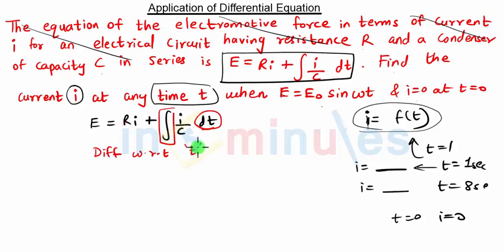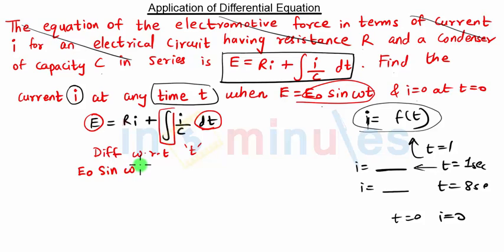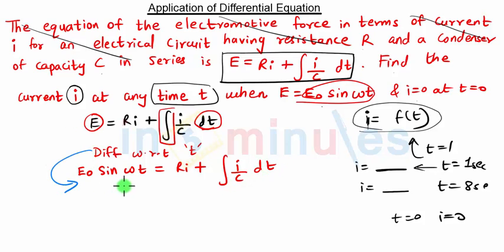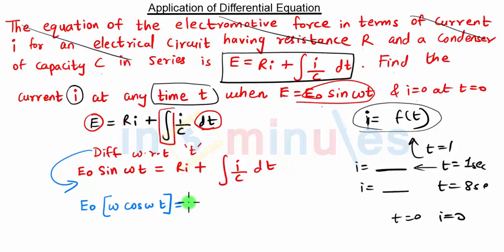Before differentiating, we substitute E = E₀ sin(ωt), giving E₀ sin(ωt) = RI + (1/C)∫I dt. Now differentiating with respect to T: E₀ is constant, the derivative of sin(ωt) is ω cos(ωt), R is constant, so we get E₀ω cos(ωt) = R(dI/dt) + I/C. The derivative and the integral cancel, giving us I/C.